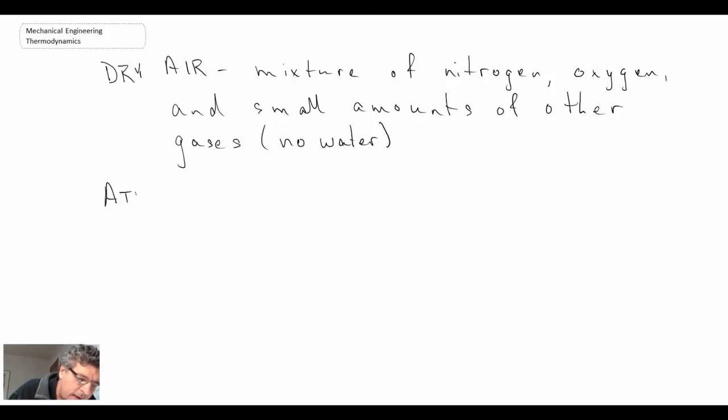Atmospheric air, on the other hand, which is what we deal with when we're doing heating, ventilation and air conditioning, it is a mixture of dry air and water vapor.